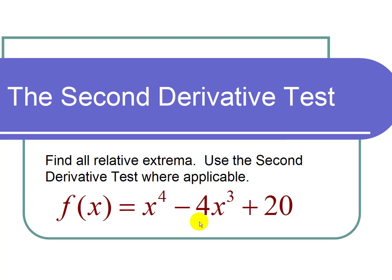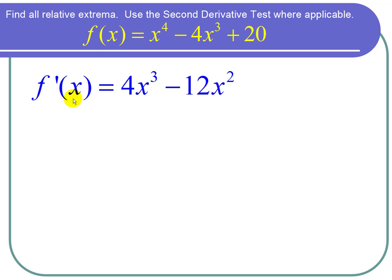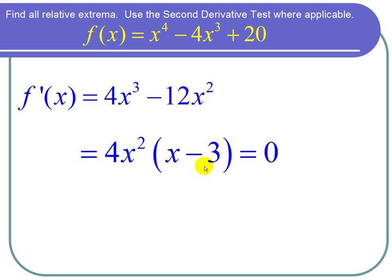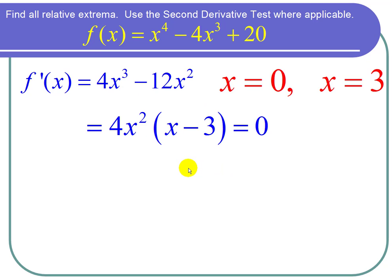To find the extrema, I first take a derivative and set it equal to zero. The derivative of f is 4x cubed minus 12x squared. I factor and set that equal to zero and I get 4x squared times x minus 3 equals zero. That has solution x equals zero and x equals 3. So those are my critical points.